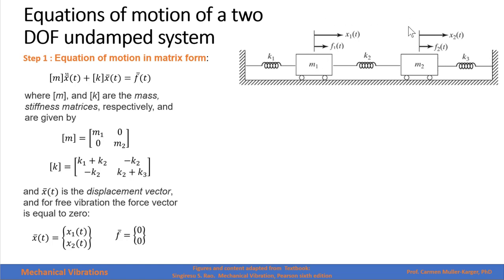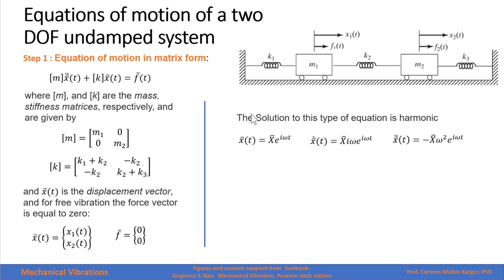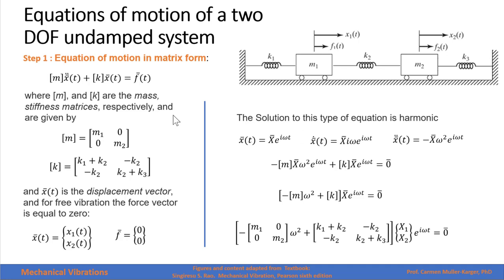So the motion of mass 1 is coupled with the motion of mass 2. For free vibration, the external forces are equal to zero, so the force vector equals zero. We know the solution of this type of equation is harmonic: displacement x times e to the i·omega·t. Deriving once gives the velocity, and deriving again gives negative omega squared times the original solution. Substituting into the equation of motion yields this expression, where we can extract the common factor of amplitude times e to the i·omega·t.